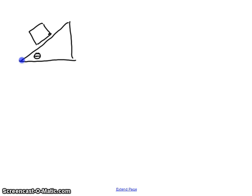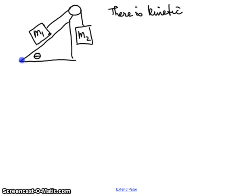We'll call this, as we did before, M1. It goes around a massless pulley to M2. However, there is friction present, and we'll say that there is kinetic friction.